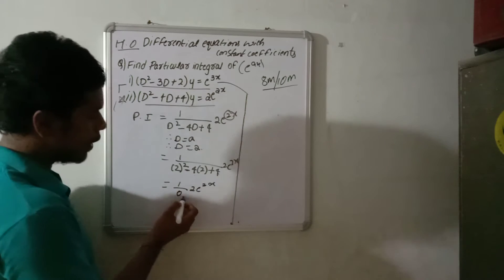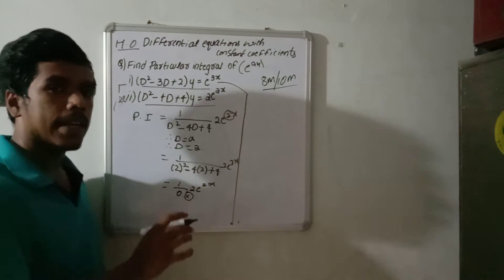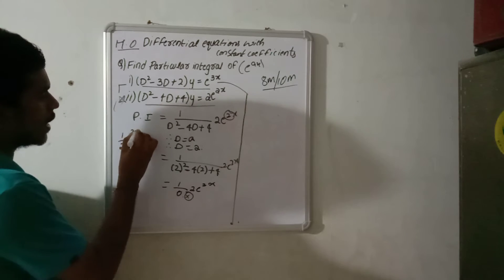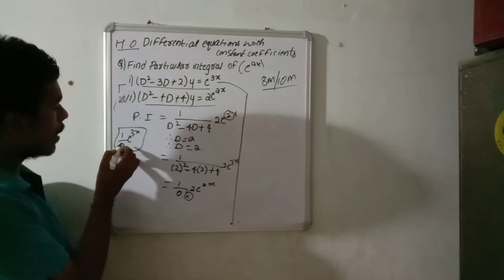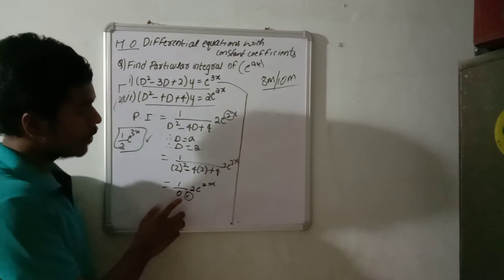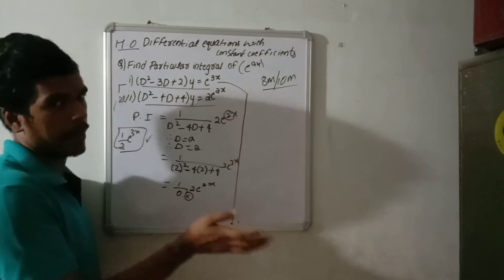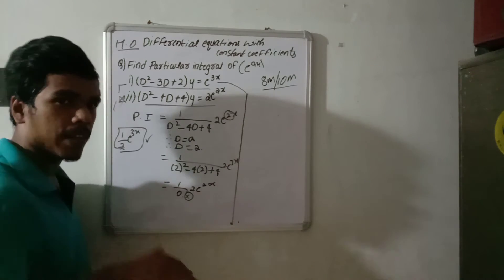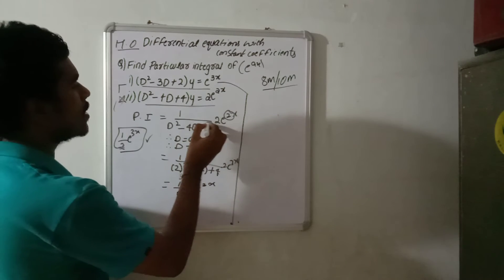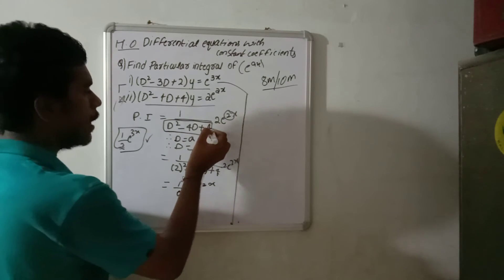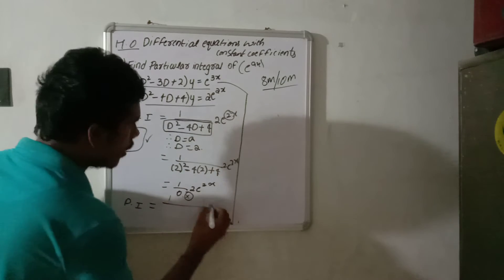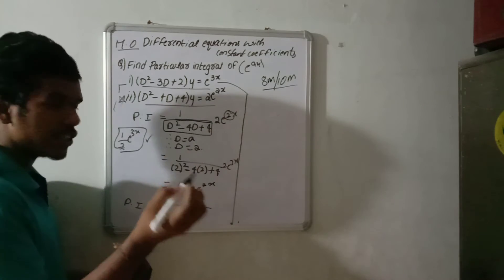Since the denominator is 0, we cannot use the direct formula. When the denominator equals 0, we multiply x in the numerator and differentiate the denominator. So we write x into e^(2x) and differentiate f(D) = D² - 4D + 4, giving f'(D) = 2D - 4.